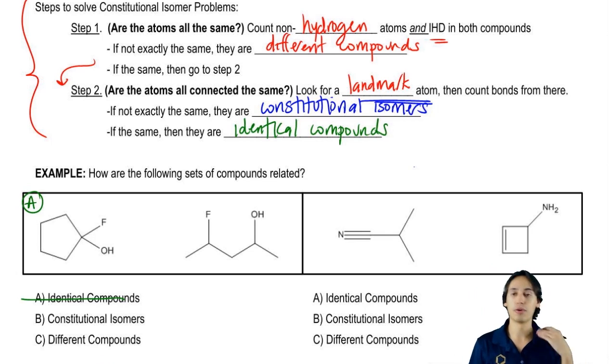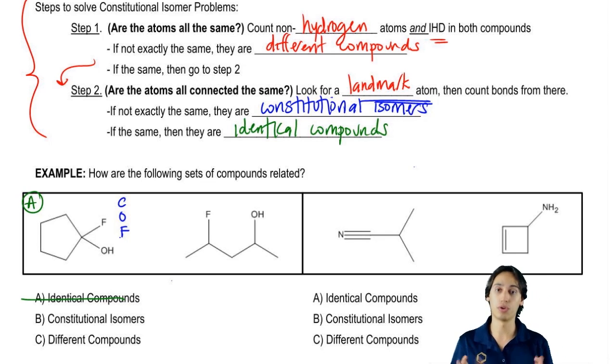Now I want to go through my flowchart. The first thing I do is count up non-hydrogen atoms and IHD. Let's start with non-hydrogen atoms. What I have here is carbon, oxygen, and fluorine. I also have hydrogens present, but remember I'm going to ignore those for now.